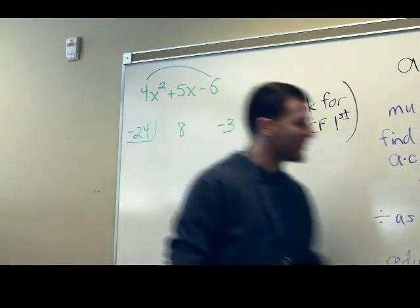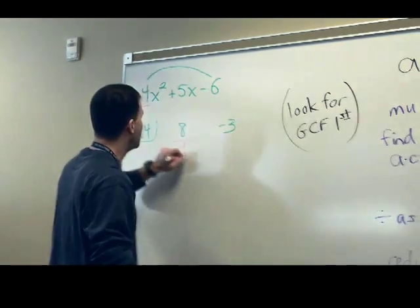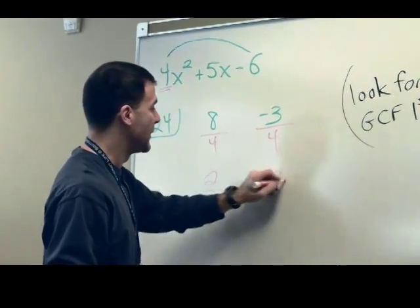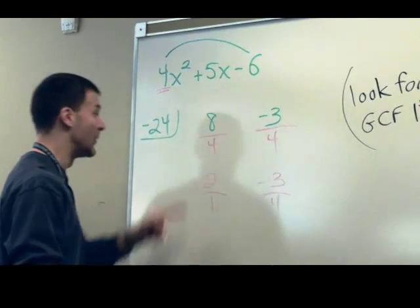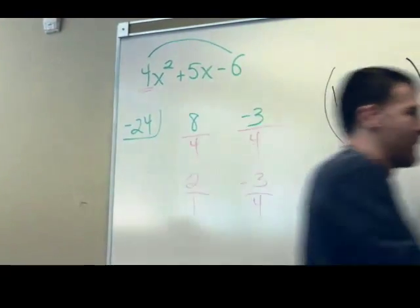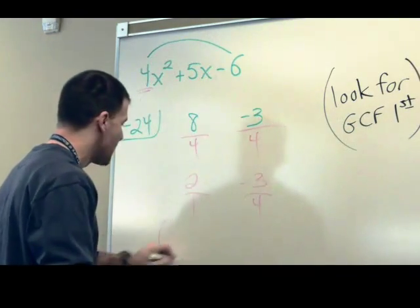We will divide each of those by that leading coefficient of 4. Reduce the fractions if we can. 2 over 1 and a negative 3 fourths, so this one reduces. But there you go.